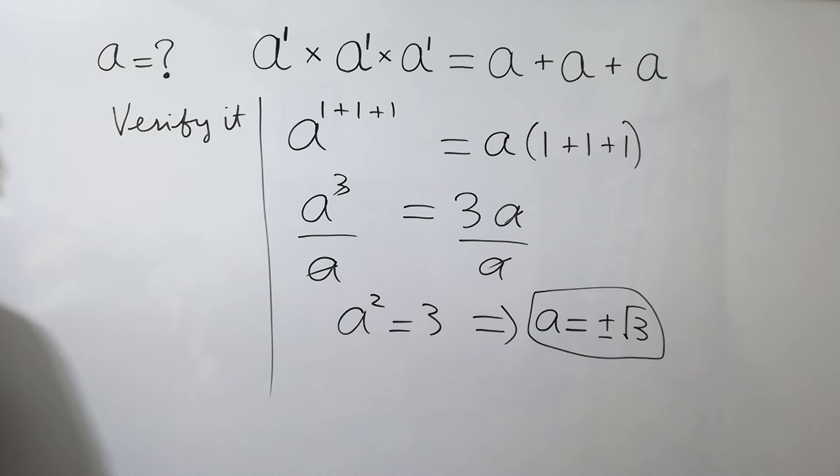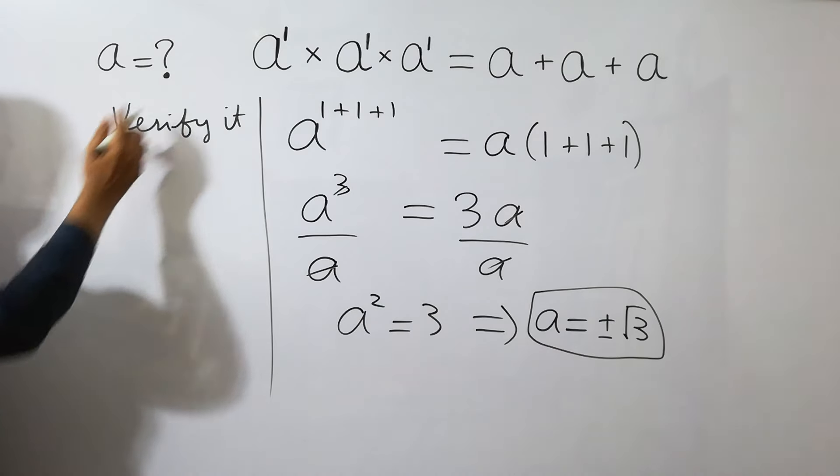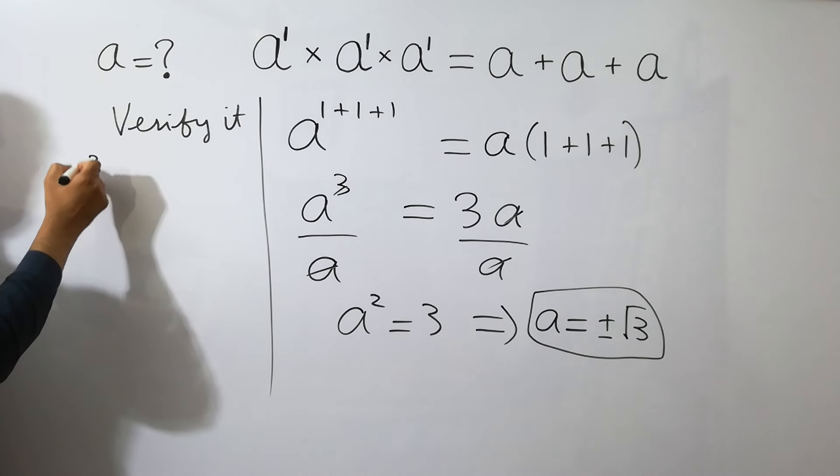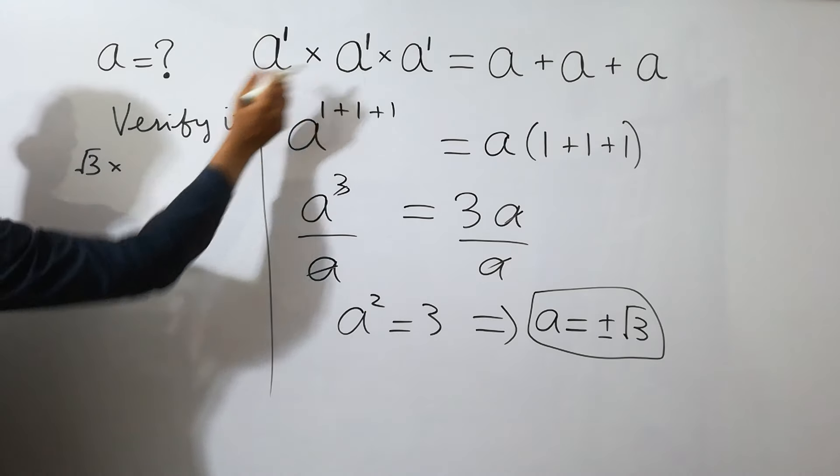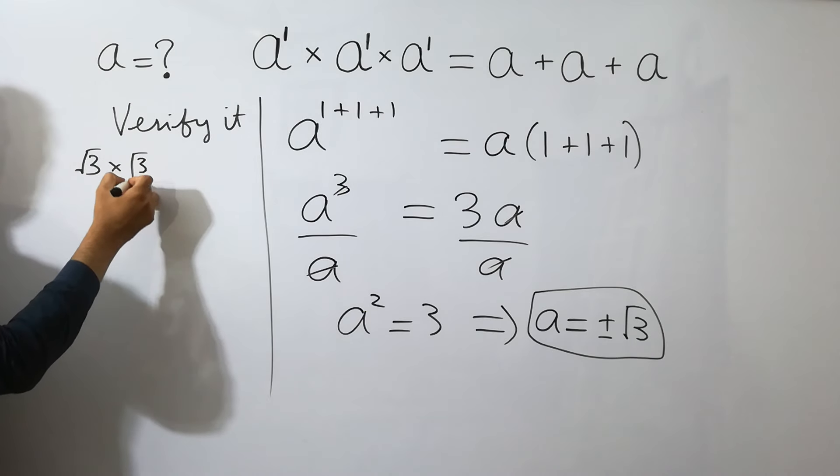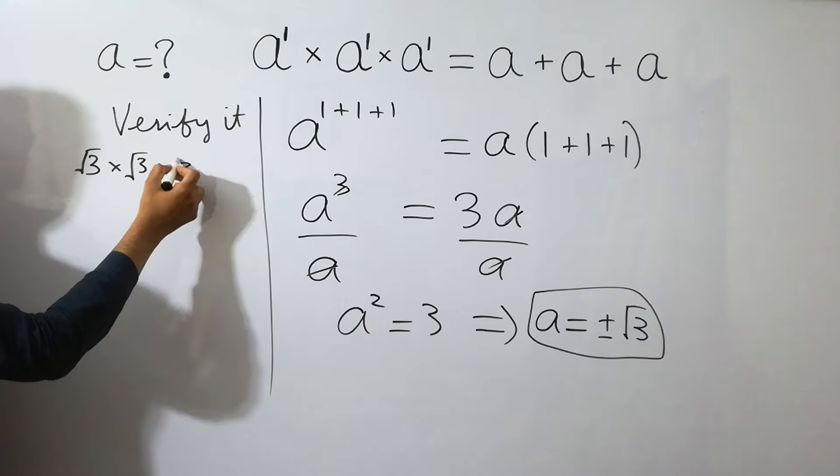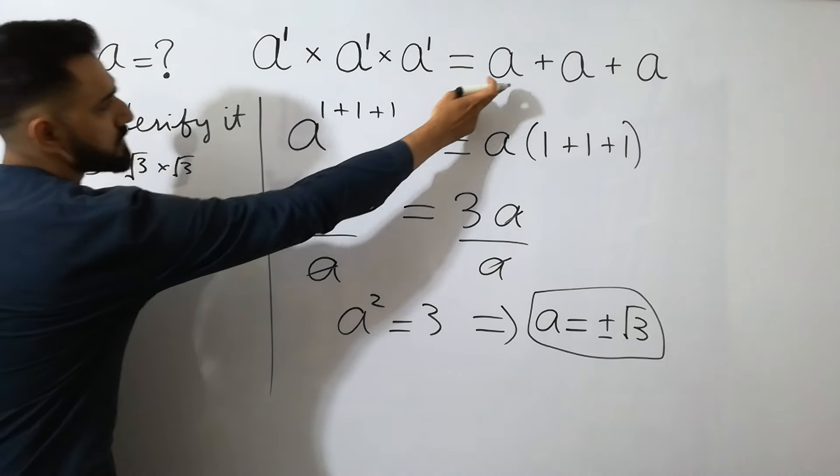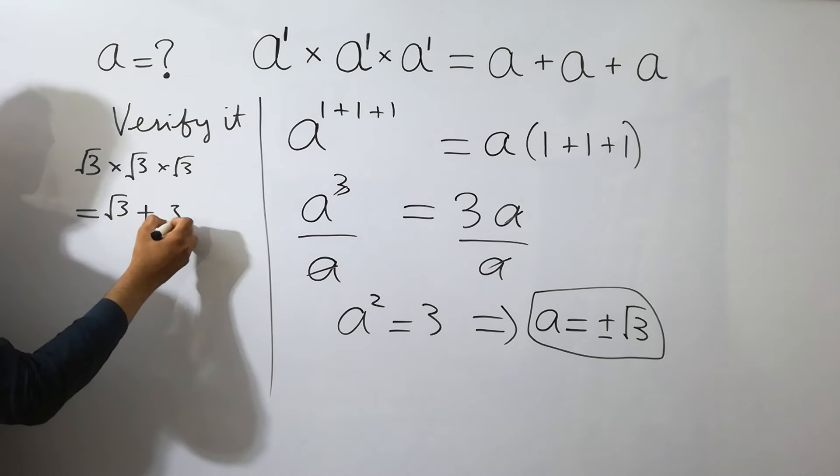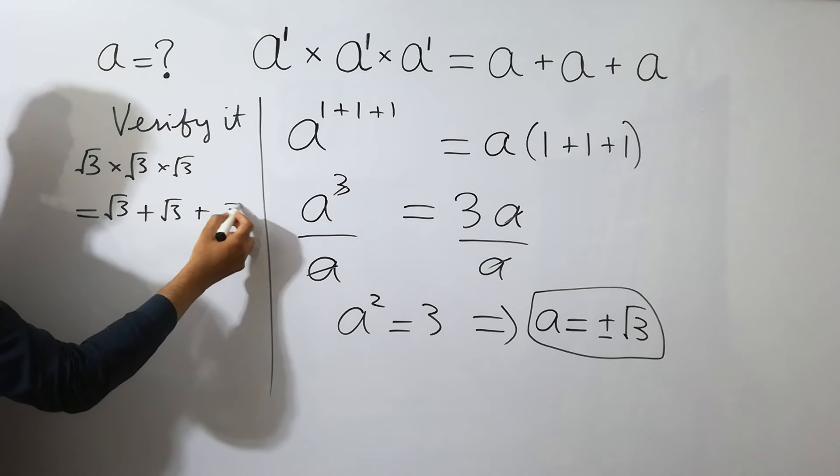If we verify it, you can see square root of 3 times square root of 3 times square root of 3 is equal to square root of 3 plus square root of 3 plus square root of 3.